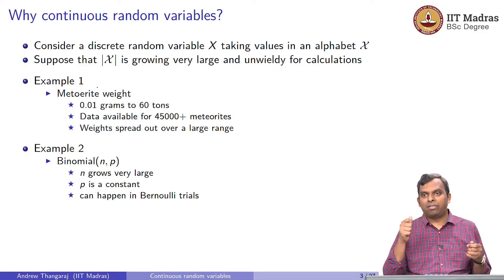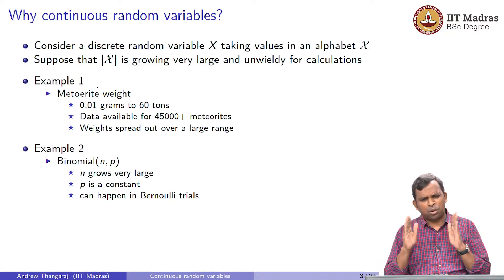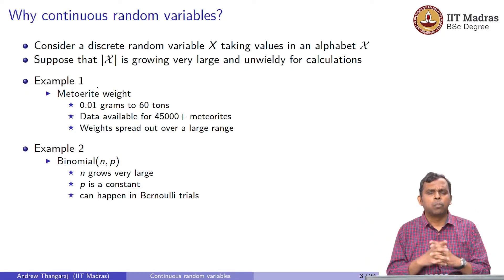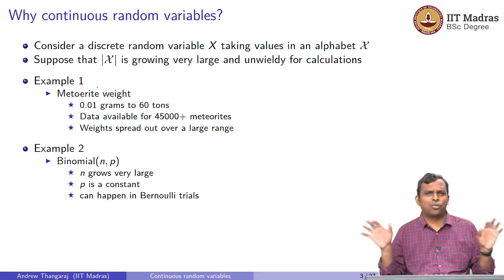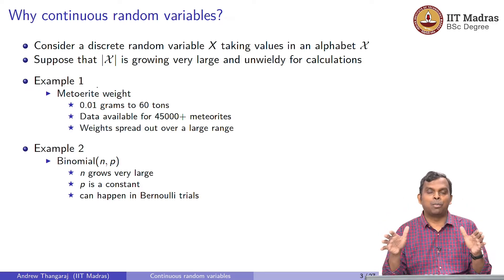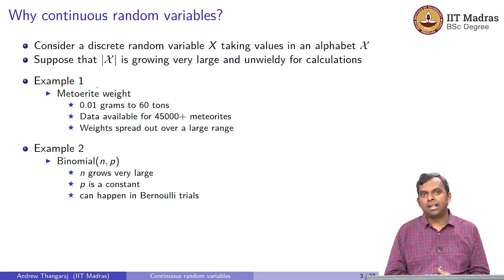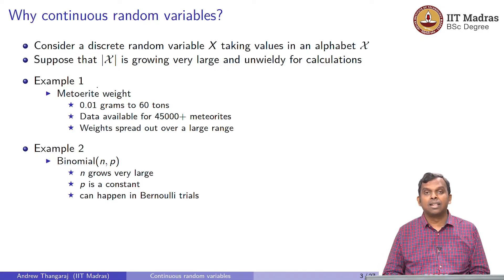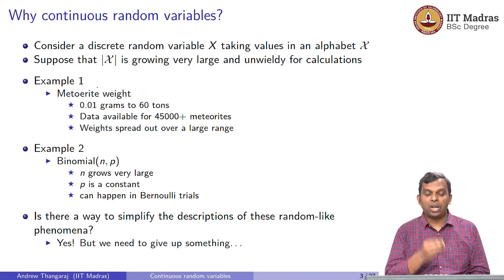When you expect the variable you are analyzing — the phenomenon you are analyzing — to take a lot of values, maybe in a small range, maybe in a large range, and each of those values has different probabilities that you have to keep track of, you are better off thinking about continuous modeling. Instead of modeling them as discrete, model them as continuous, and then there are tools from the world of continuous random variables which you can use to do simpler calculations with that model.